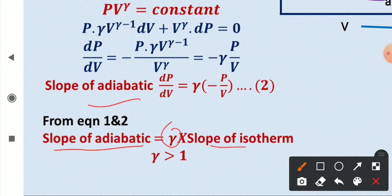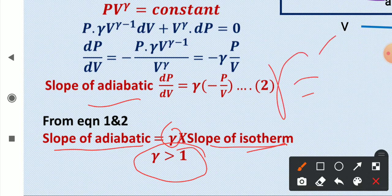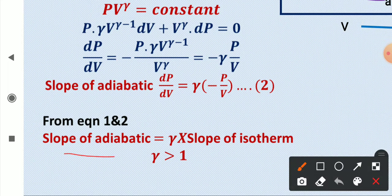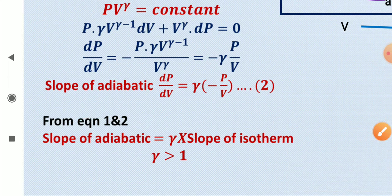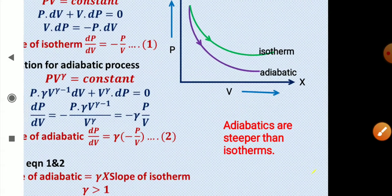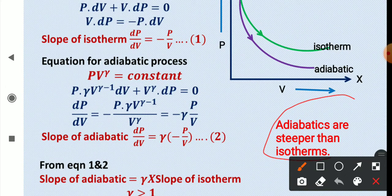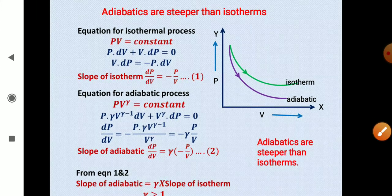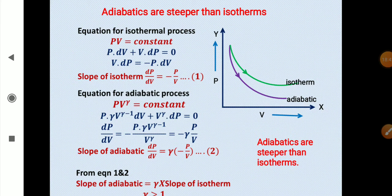Since γ = Cₚ/Cᵥ and Cₚ > Cᵥ, γ is always greater than one. Therefore the slope of the adiabatic is greater than the slope of the isotherm — adiabatics are steeper than isotherms, as visible in the PV diagram where the adiabatic curve has a greater slope than the isotherm. This concludes the video — thank you for watching.